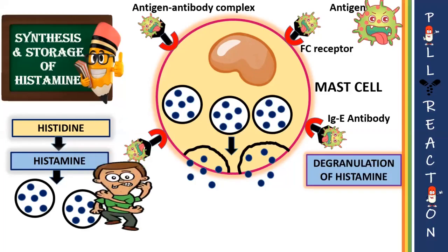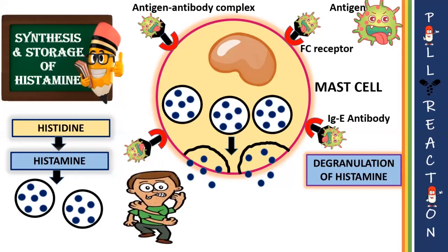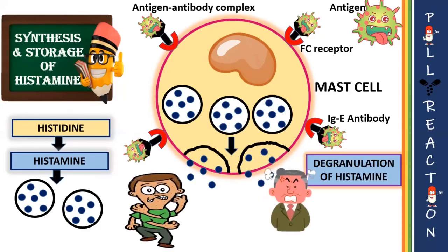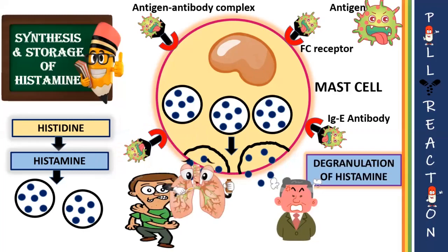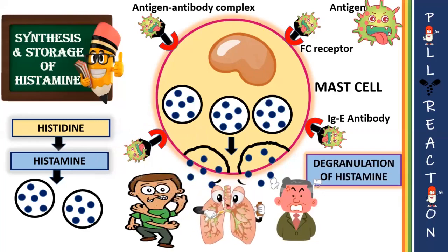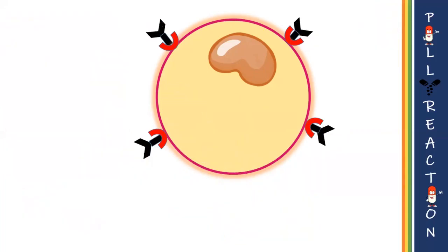As a result, histamine-mediated immune responses such as itching, flushing of the face, redness, and constriction of bronchial smooth muscles are seen. Next, moving on to the fascinating phenomenon — that is, why histamine is stored along with heparin in mast cells.